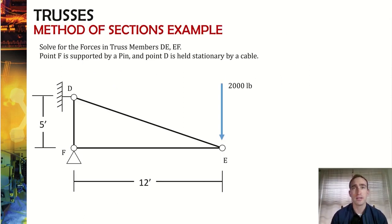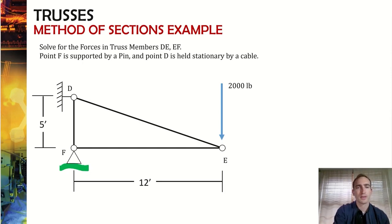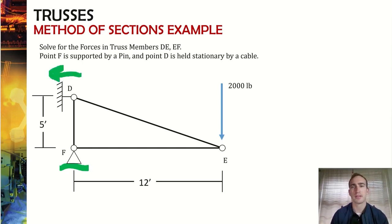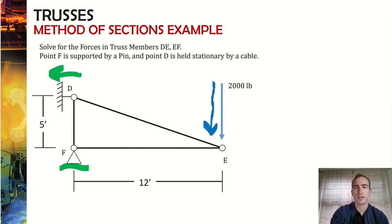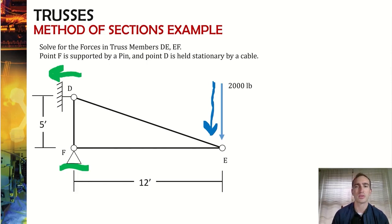In this example we're going to look at a simple truss labeled DEF. It has a pin connection at the bottom left, a rope attachment at the top left that can only pull up, and an applied force of 2,000 pounds acting straight down on point E on the right side. We'll move to pen and paper and solve for the forces in members DE and EF.